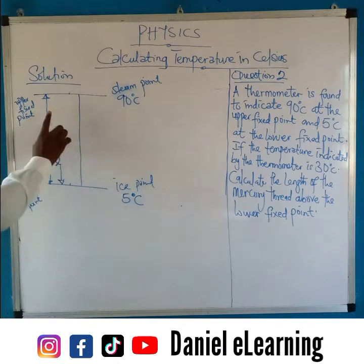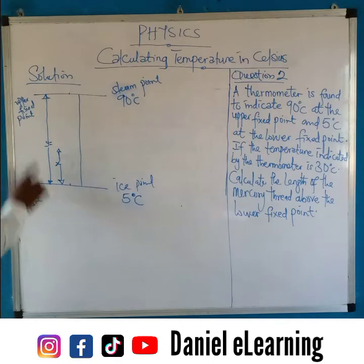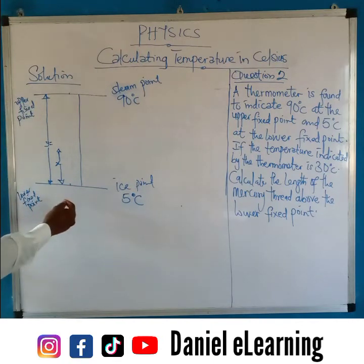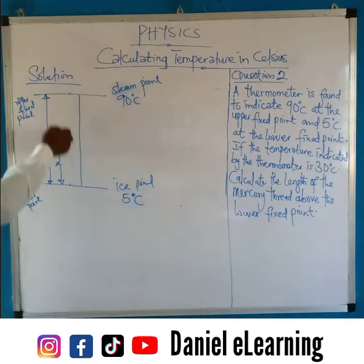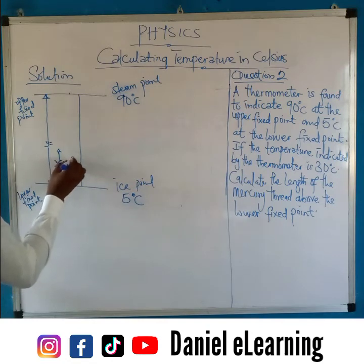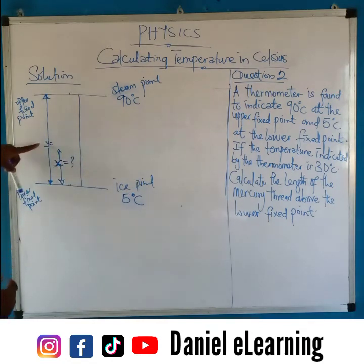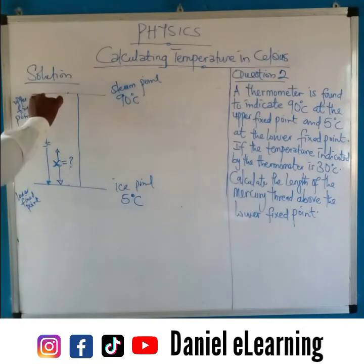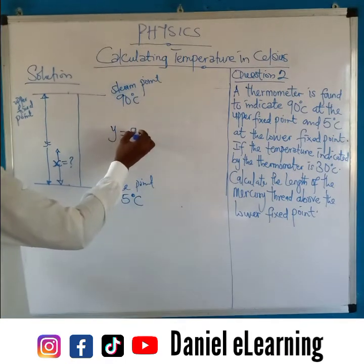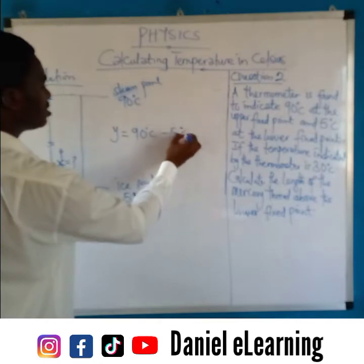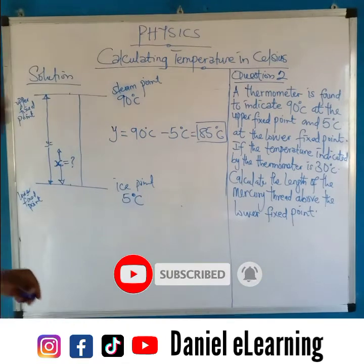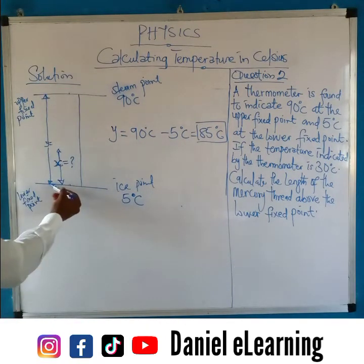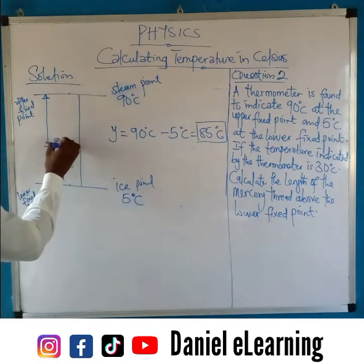The length of the mercury thread above the lower fixed point is what we are looking for — that is X, which is unknown. Now, Y is the distance between the upper fixed point and the lower fixed point. We can get Y by saying: Y equals 90°C minus 5°C, which gives us 85°C. So the fundamental interval Y is 85°C.